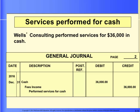Let's take a look at how transactions affecting revenues and expenses will be recorded in the journal. When the business performs consulting services and gets paid immediately for $36,000 in cash, Wells Consulting will debit cash for $36,000 and credit fees income for the same amount. Here is the general journal entry.